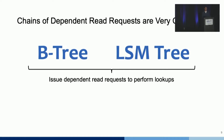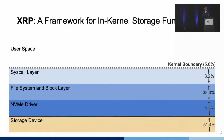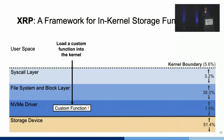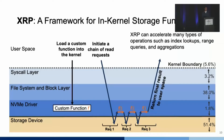We find that chains of dependent read requests are very common in storage applications. B-trees and LSM-trees, including their variants, are used as on-disk indexes in most storage engines, and they both issue dependent read requests to perform lookup. Therefore, we built XRP, a framework for in-kernel storage functions. XRP allows applications to upload custom functions into the kernel. When the application initiates a chain of read requests, the custom function can parse I/O responses and submit more requests if necessary. Only the final result is returned to user space. XRP can accelerate many types of operations, such as index lookup, range queries, and aggregations.